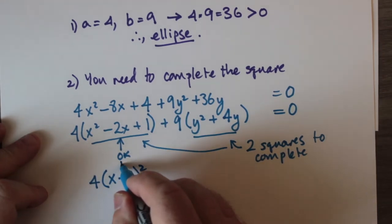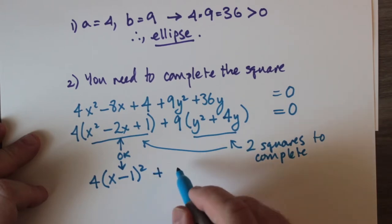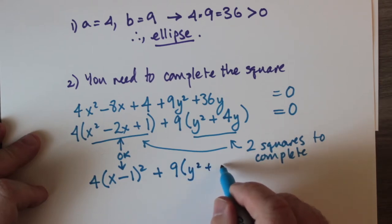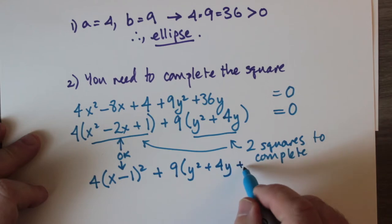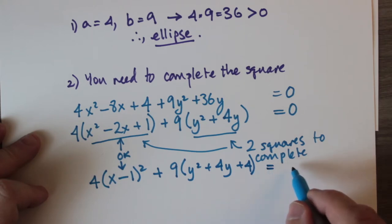Now to complete the square for y² + 4y we add 4, but in order to do that we have to take away 4. But wait a minute, the 4 is inside a bracket which is multiplied by 9, so we really have to take away 4 × 9.